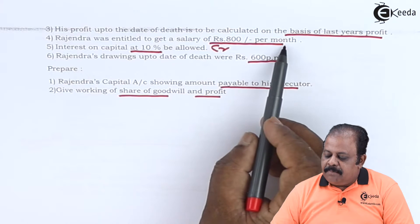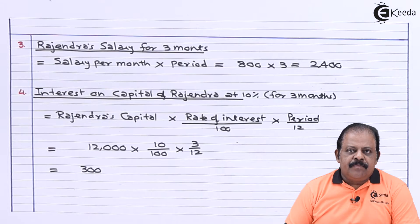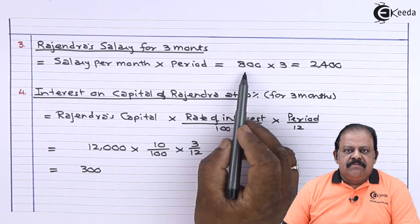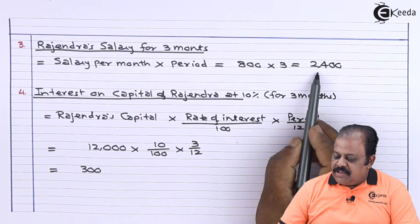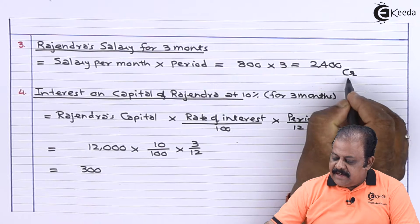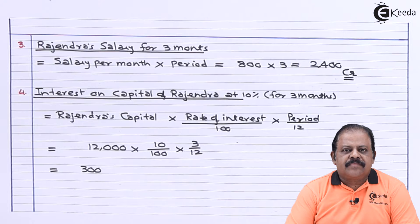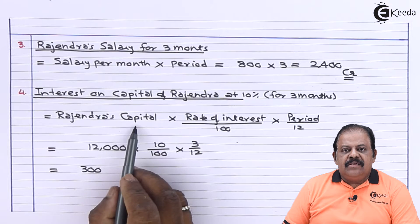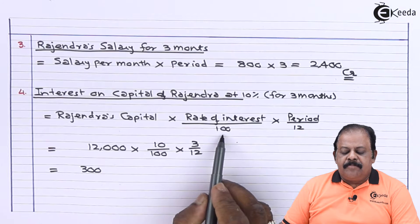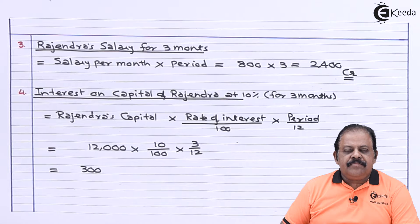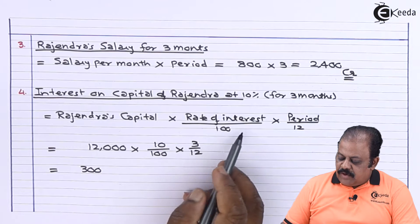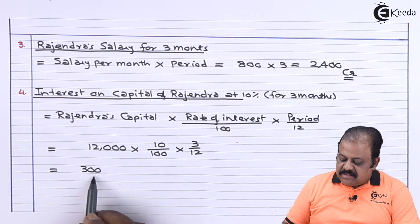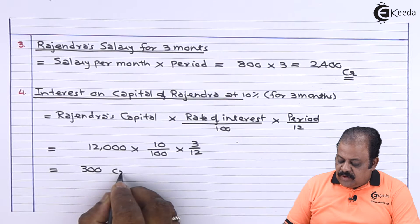Rajendra was entitled to a salary of 800 per month. Salary for three months = 800 × 3 = 2,400. This will be credited to Rajendra's capital account. Interest on capital: Rajendra's capital is 12,000 at 10% per annum for three months = 12,000 × 10/100 × 3/12 = 300. This amount will also be credited to Rajendra's capital account.